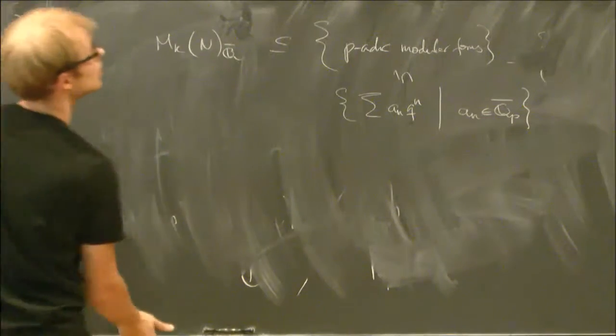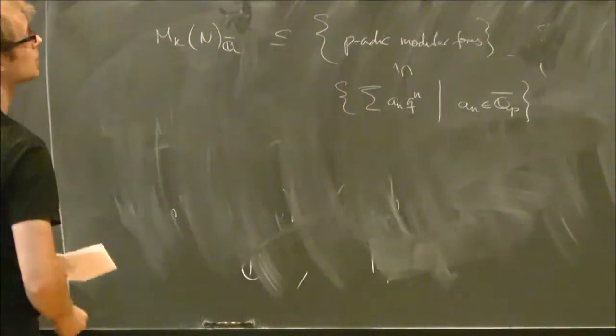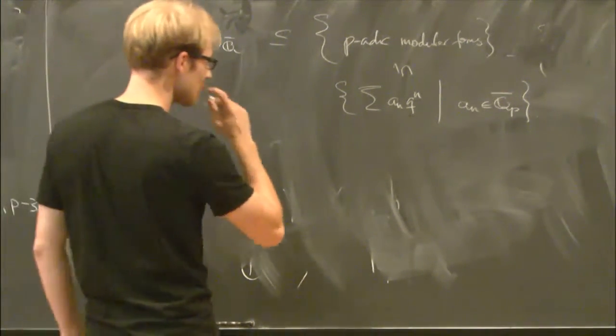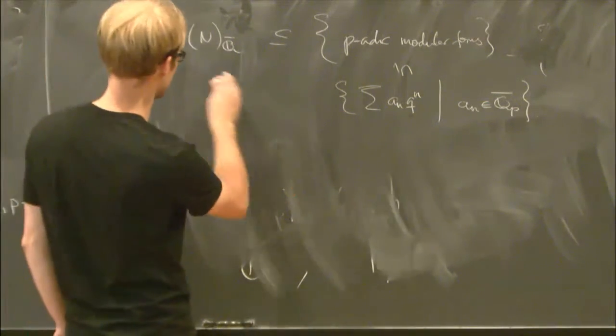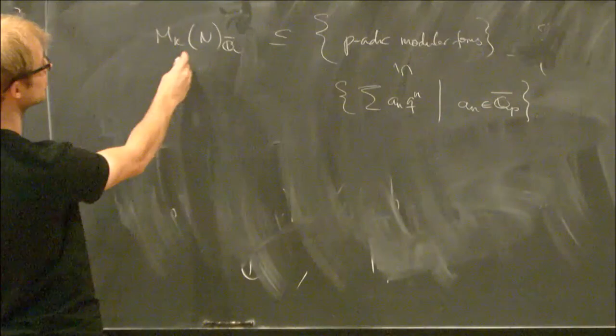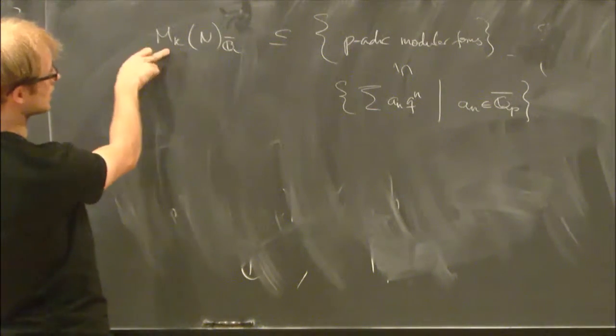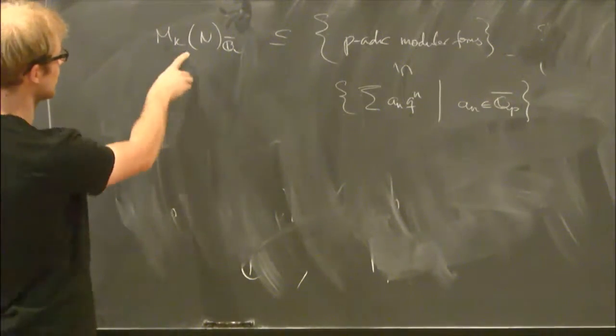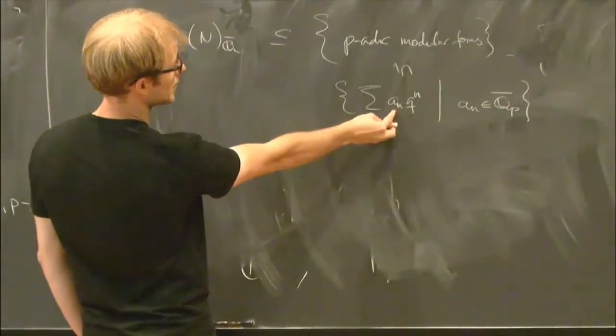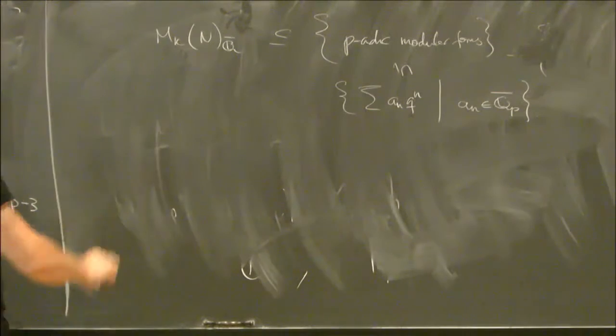So in some sense, many of them are rather concrete objects. And in particular, they contain anything that you can try and get by a limit process starting with things in here for different weights, where you can sort of try to obtain expansions as limits of expansions of objects.